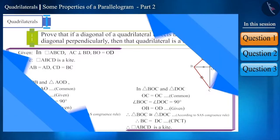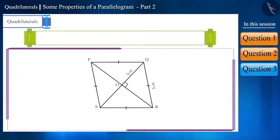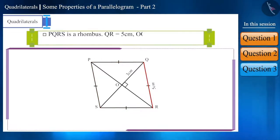Now, let's take the next question. On the given figure, quadrilateral PQRS is a rhombus and the measure of sides QR and OQ are given to be 5 cm and 3 cm respectively. Now, find the length of diagonal PR.